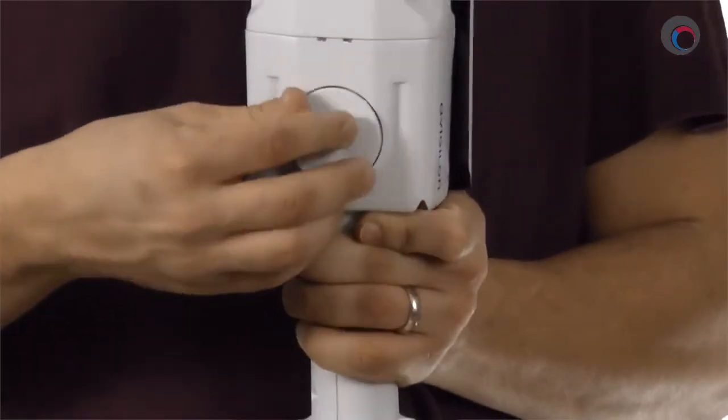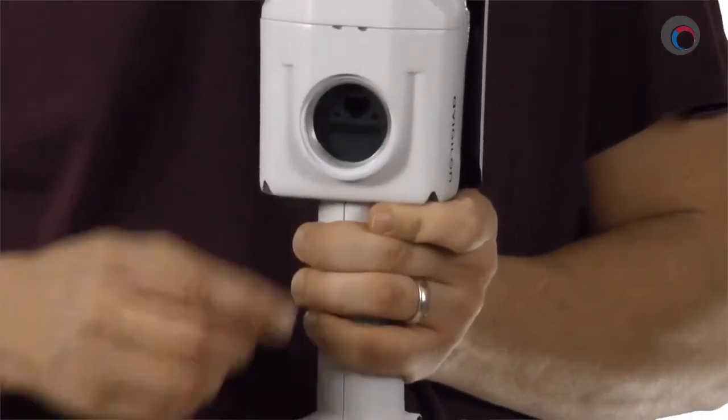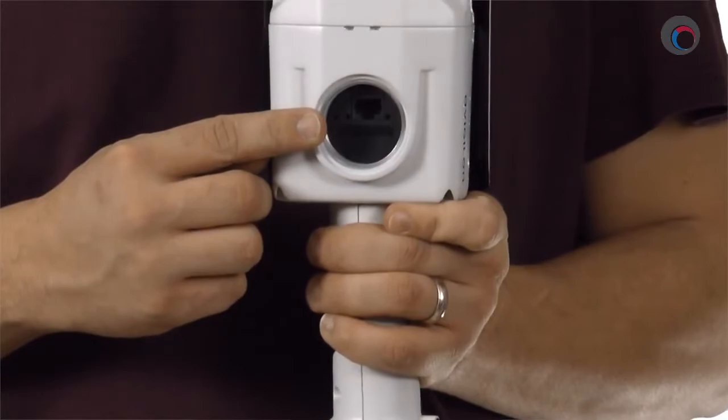Flip the camera up like this for a second and on the bottom here there's a removable cover that underneath will reveal an external Ethernet jack for aiming the camera.